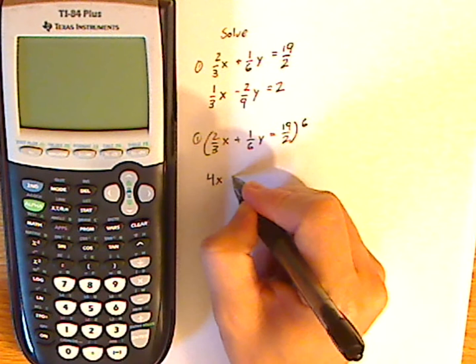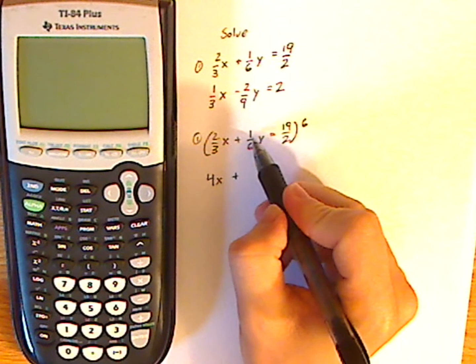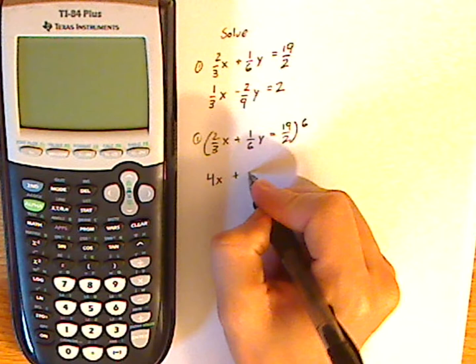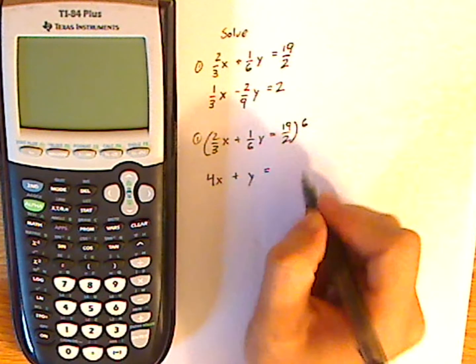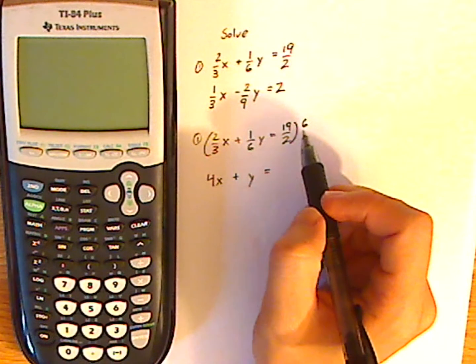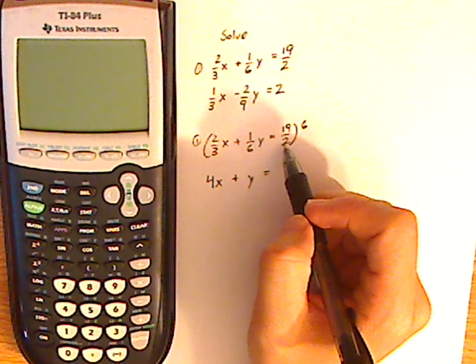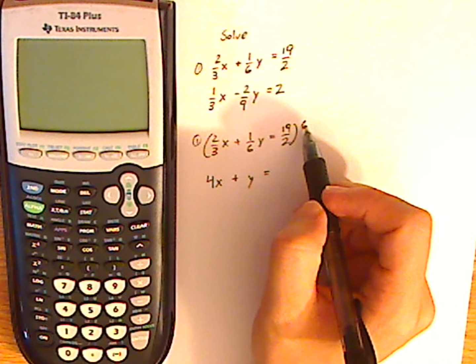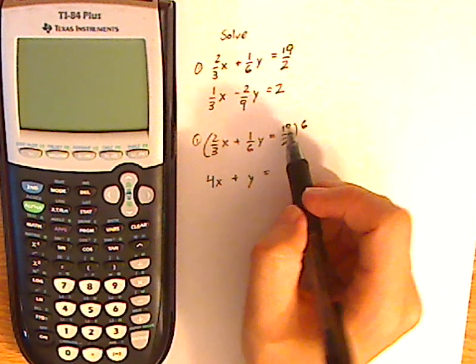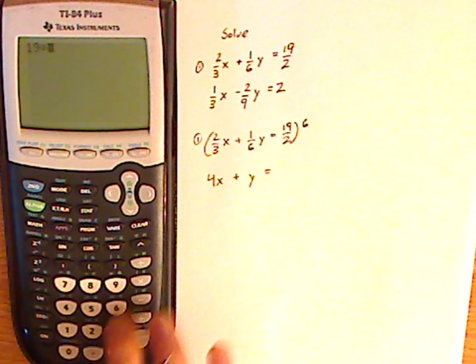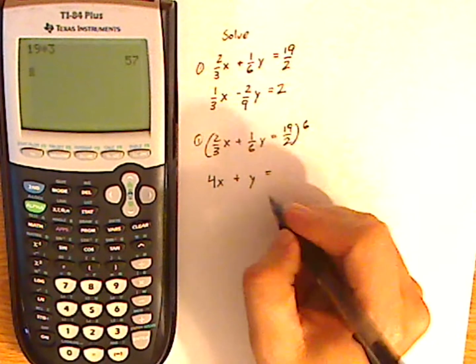6 times, well, 6 goes into 6 once, so it's 1 times 1, which is just y, equals, and then I have 2 times, and then 2 goes into 6, 3 times, so now I have 3 times 19. 19 times 3, using my calculator, is 57.